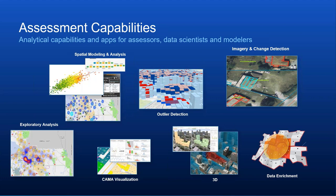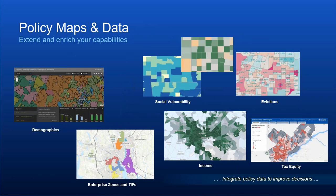We share data internally to ask questions and externally to engage the public — not just to tell them property values but to show all the data involved and how we came up with those values. The transparency in the operation, not just transparency with data. Capabilities you may be familiar with include spatial analysis and modeling to understand how location impacts value. There was recently a nice blog on this. We also do a lot of exploratory analysis, finding outliers — why does one neighborhood have a higher or lower COD than another?